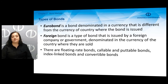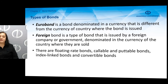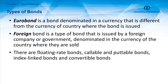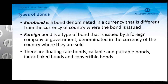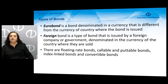We can also define eurobonds and foreign bonds and emphasize their differences. A eurobond is a bond denominated in a currency different from the currency of the country where the bond is issued. A foreign bond is a type of bond issued by a foreign company or government, denominated in the currency of the country where they are sold. So foreign bonds are issued in the currency of the country where they are issued, whereas eurobonds are denominated in a different currency.